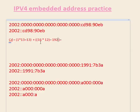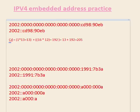So now we have thirteen plus one hundred ninety-two, and that equals two hundred five. So we know the first octet is two hundred five. The next group we have is ninety-eight.